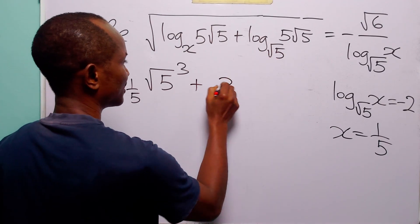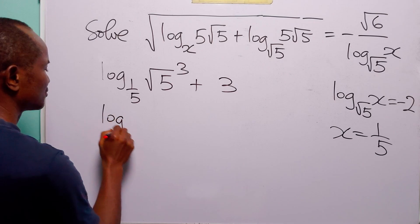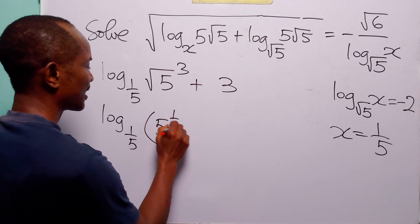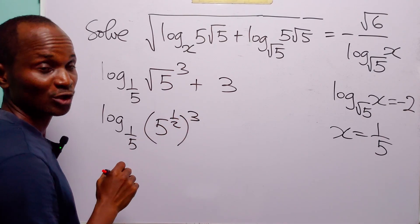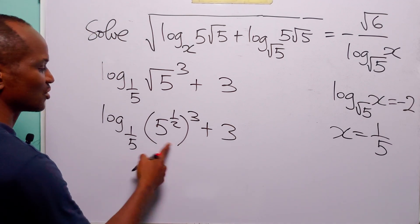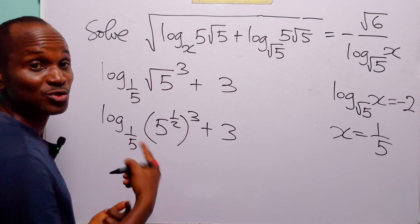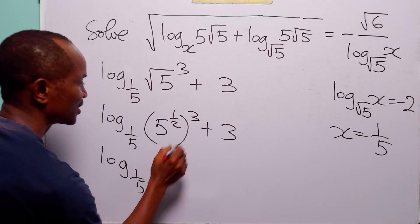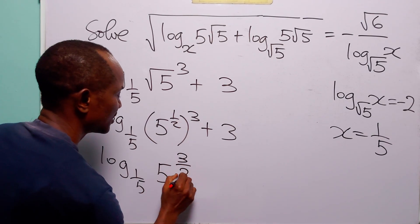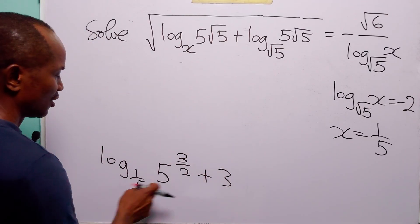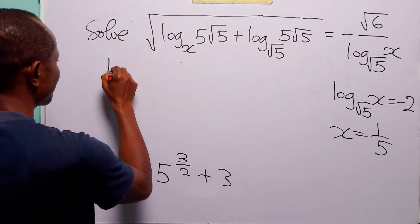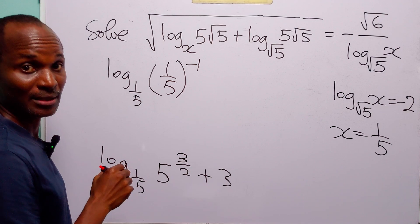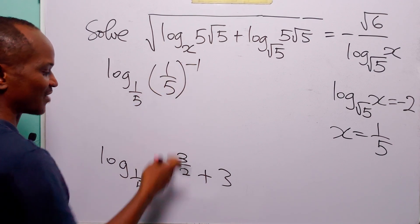This is plus 3. We have log to base 1 over 5 of 5 to the power half, and this is cubed, then plus 3. To get rid of the brackets, we multiply the two powers. So this is the same as log to base 1 over 5 of 5 to the power 3 over 2, plus 3. But we can also write 5 as 1 over 5 to the power minus 1, and this is raised to the power 3 over 2, then plus 3.